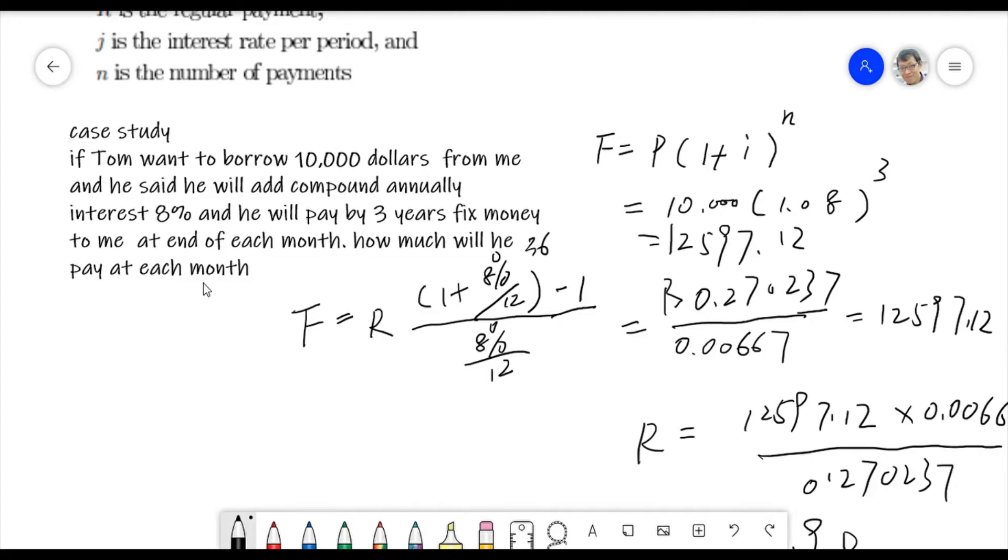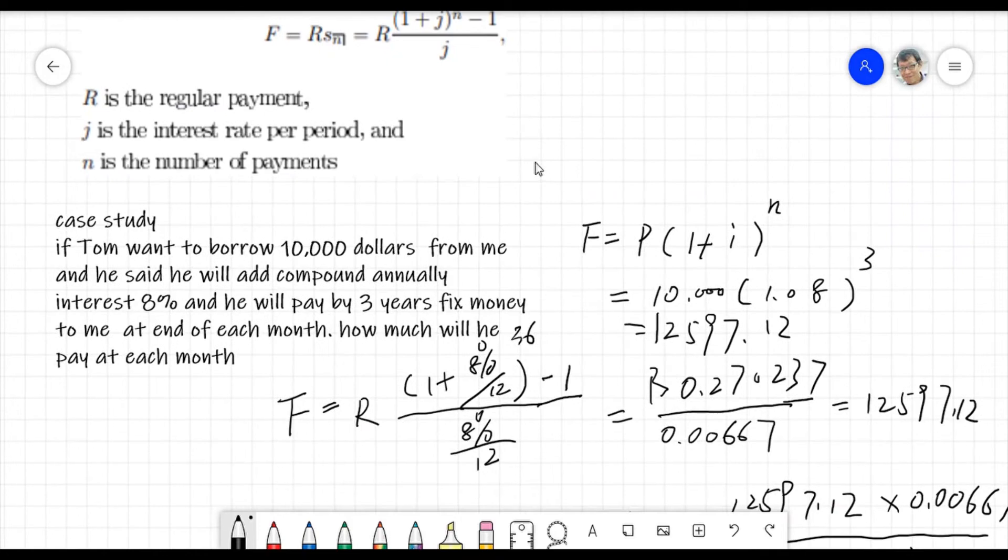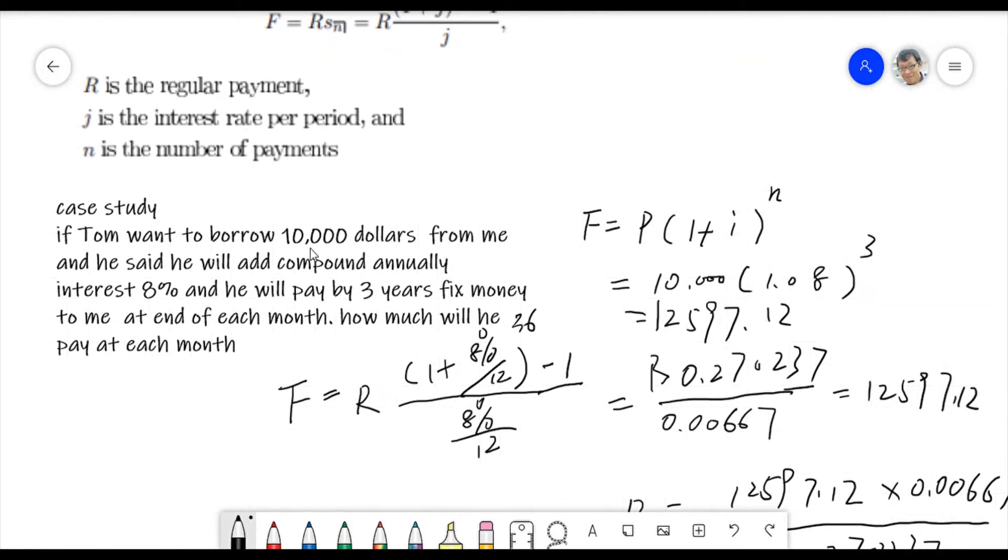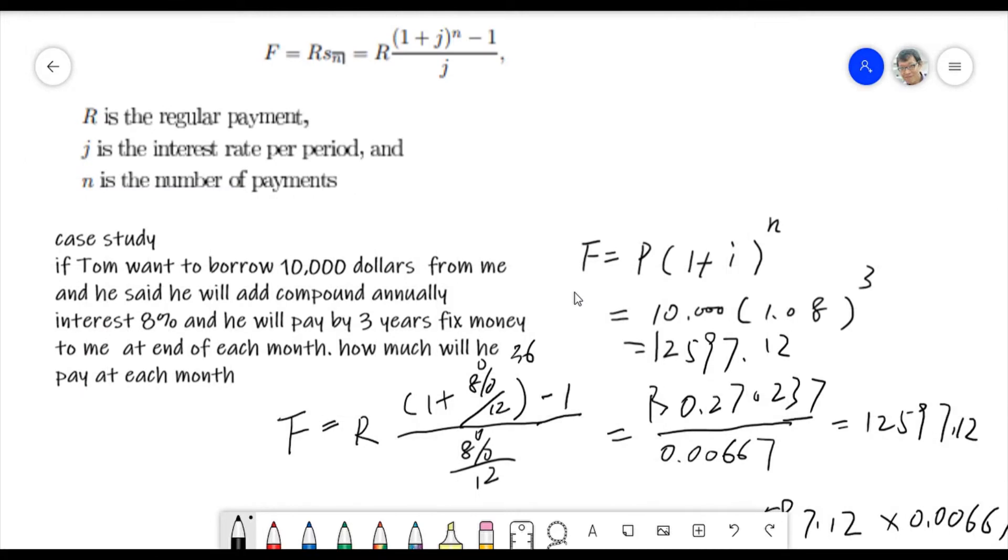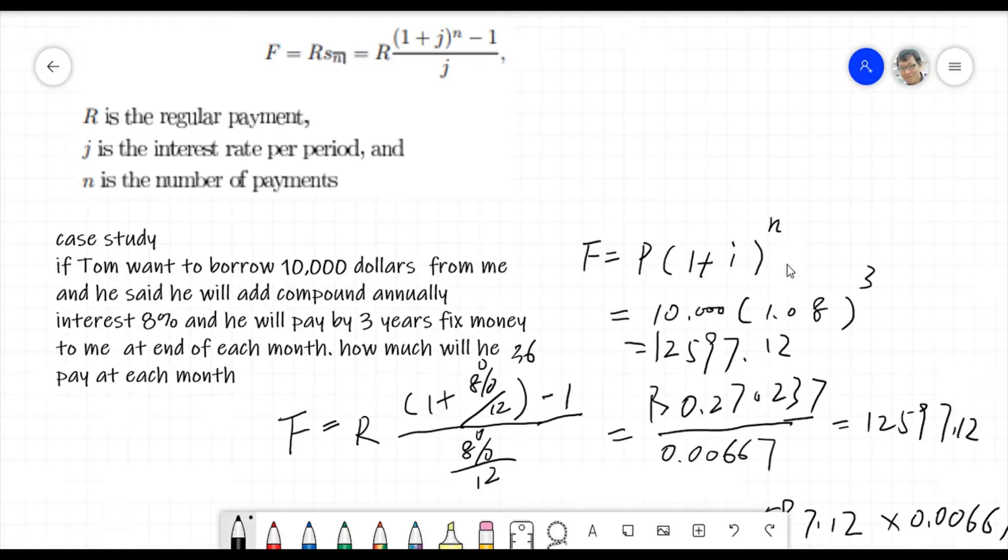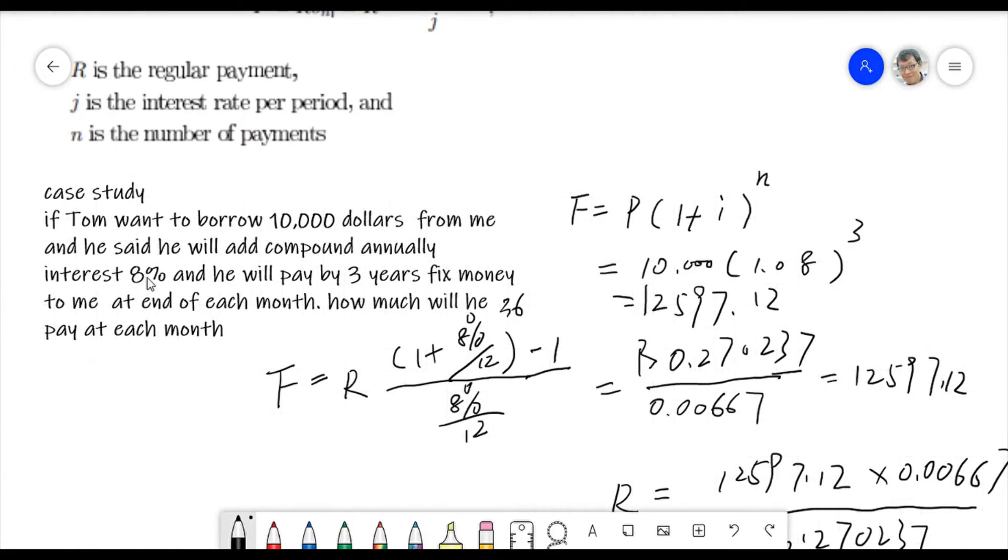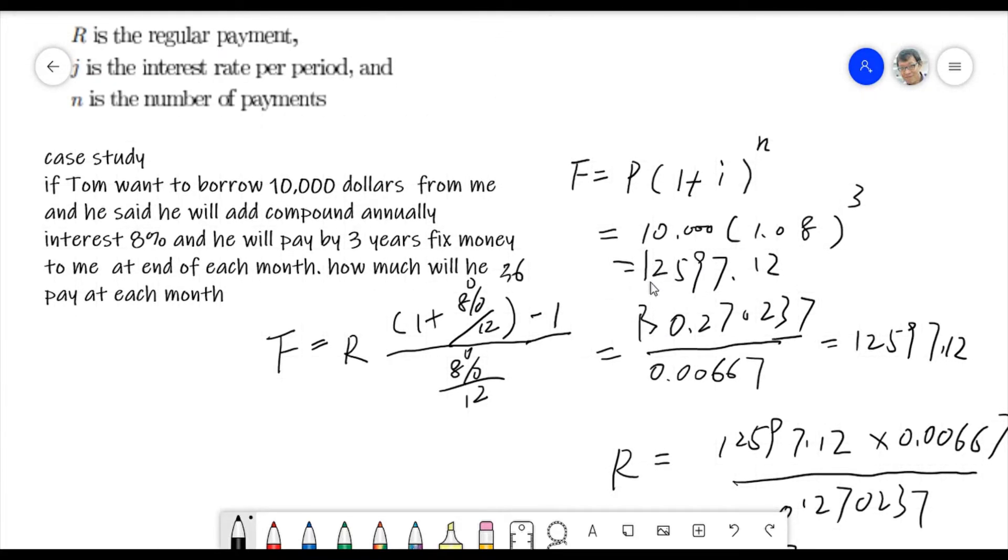And then how much will he pay at each month? So that's easy. That's the review. What's the question here? The scenario is like, I will borrow $10,000 to Tom and Tom promise to pay back by every month at the end of every month. Totally how long? Three years. And not earning payback for my borrowing $10,000, he will also add the annually compound interest to me as a compensation. Because anyway, it makes sense because every year the money will be devalued. So he gave some interest as like to cover that kind of devalued.